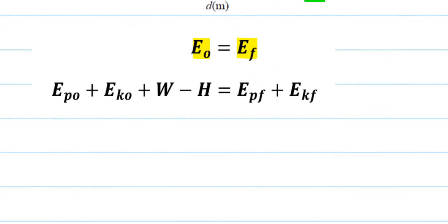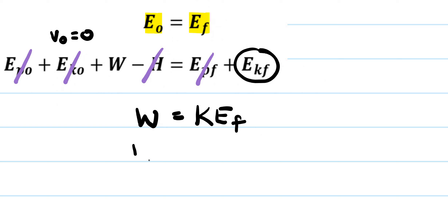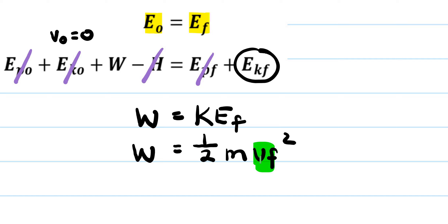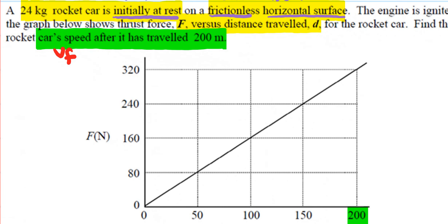Updating the work-energy theorem: no potential energy, no friction, no initial kinetic energy. We conclude that the work equals the final kinetic energy. Kinetic energy equals one half mass times final speed squared, and we want to find the final speed. The mass for this problem is 24 kilograms.